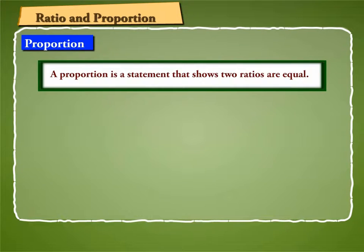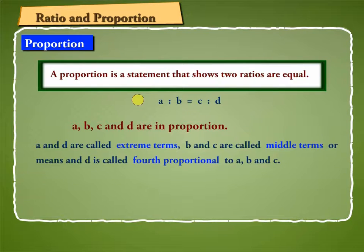A proportion is a statement that shows two ratios are equal. In general, if A is to B is equal to C is to D, then we say that A, B, C and D are in proportion. A and D are called extreme terms, B and C are called middle terms or means, and D is called fourth proportional to A, B and C.